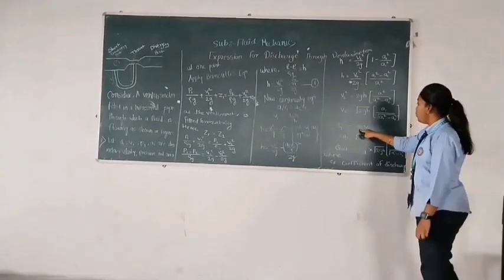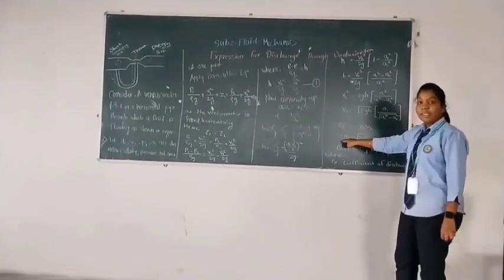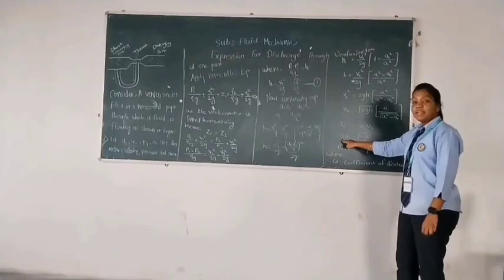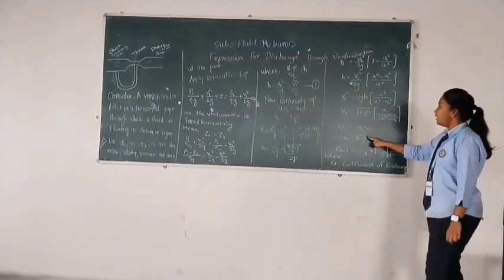We get Q = A2·V2. Q, which means discharge, so the theoretical discharge is Qth = A1·A2·√(2gH)/√(A1² - A2²).